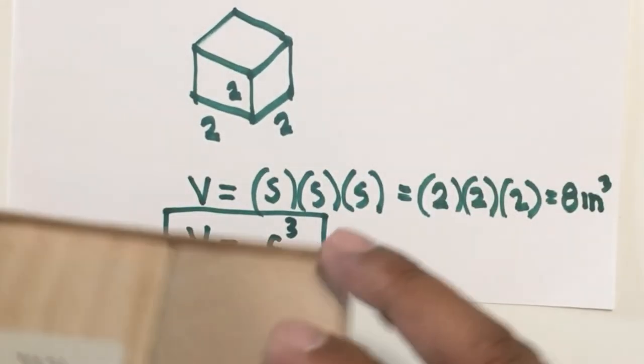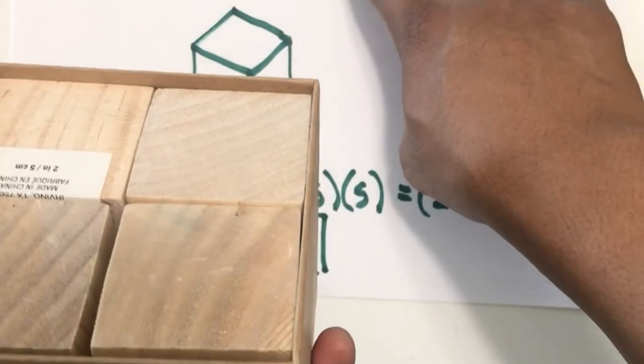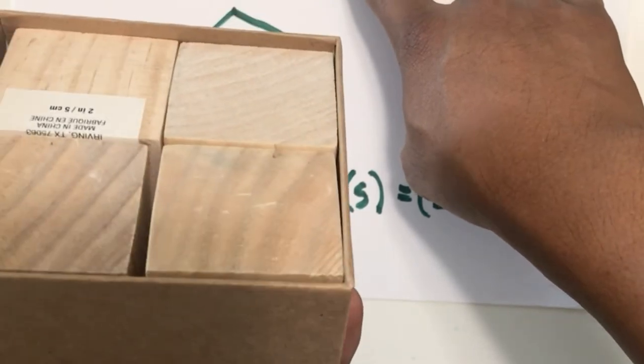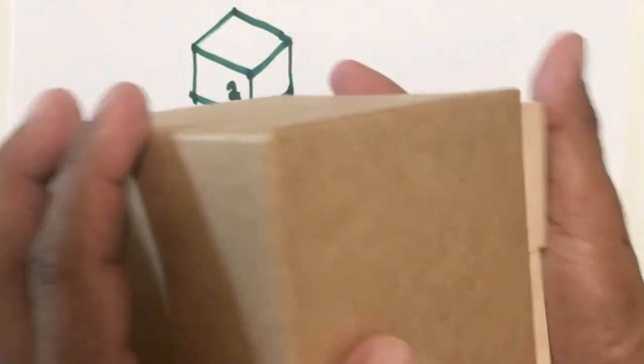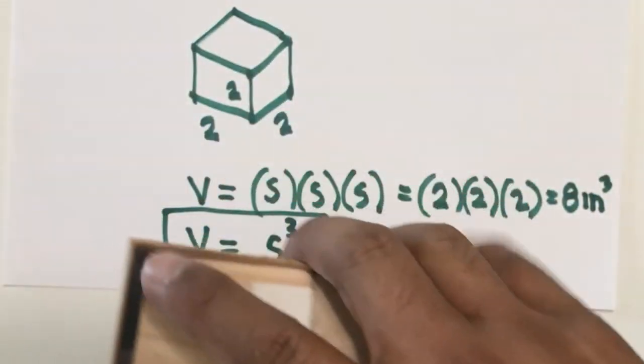And I would like to emphasize the interpretation that whenever you compute for the volume, the unit is very important because you interpret that as the number of these smaller cubes that can fit inside the object.